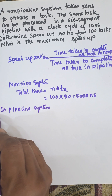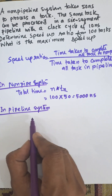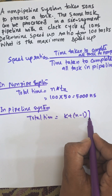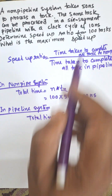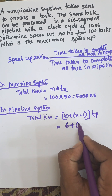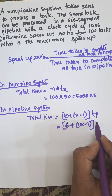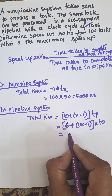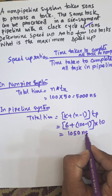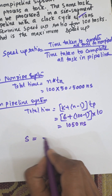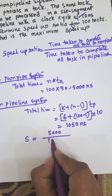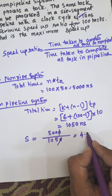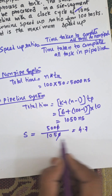In the pipeline system, total time equals (k + n − 1) multiplied by tp. Here k is the number of segments = 6, n is the number of tasks = 100, so (6 + 100 − 1) × 10 nanoseconds = 105 × 10 = 1050 nanoseconds. Speed up equals 5000 divided by 1050, which is approximately 4.76.